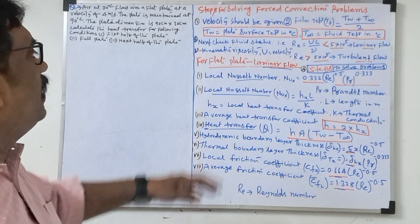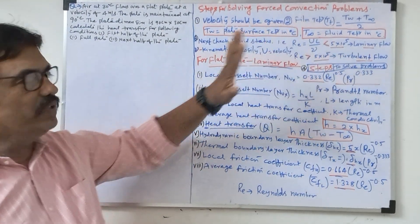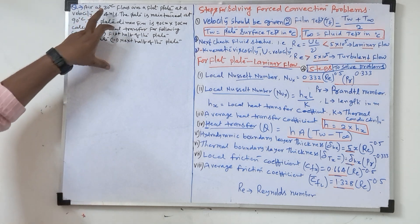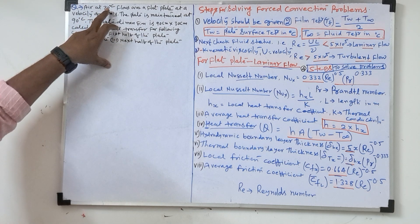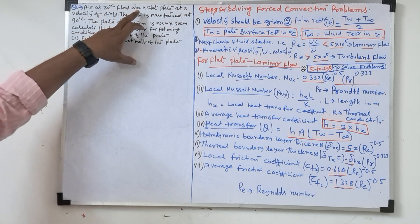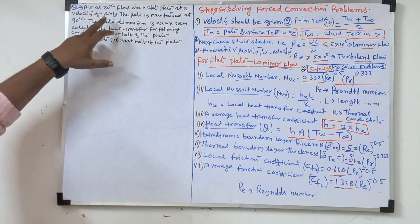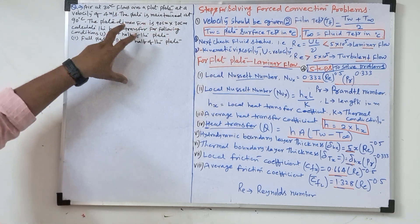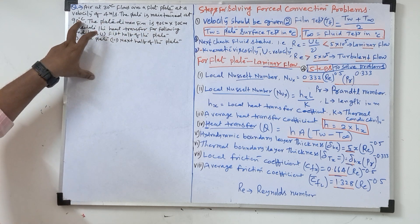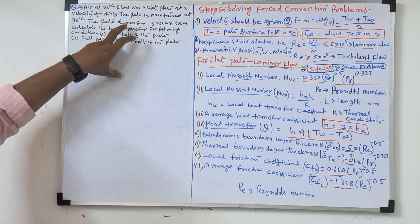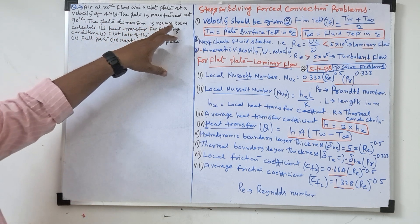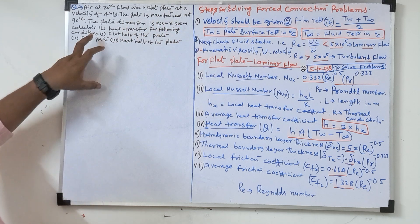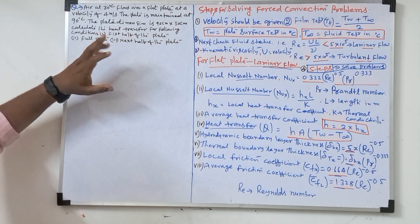Hello students and friends. Today I am going to discuss forced convection's one more problem. What is the problem given? Air at 30 degree Celsius — fluid temperature 30 degree given — flows over a flat plate at a velocity 4 meter per second. Velocity given means this is the forced convection problem. The plate is maintained at temperature 90 degree. The plate dimensions given are 90 centimeter into 30 centimeter. Calculate the heat transfer for the following conditions.